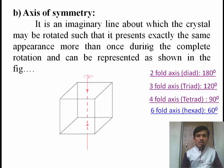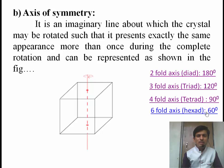Similarly, we can explain the 6-fold axis of symmetry. If the crystal is hexagonal, it shows a 6-fold axis of symmetry. After rotating through 60 degrees it repeats the same appearance. Hence, the axis is called the 6-fold axis of symmetry.